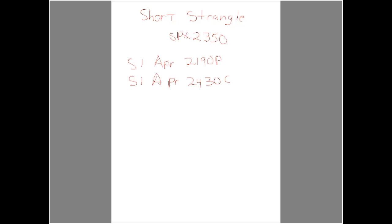So a short strangle is selling an out-of-the-money call — in this case about 80 points out of the money — and selling the 2190 put, which is about 160 points out of the money.